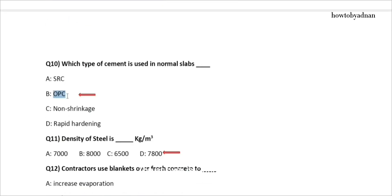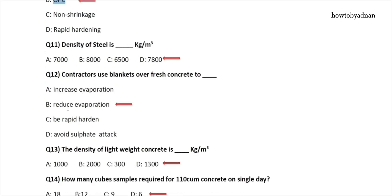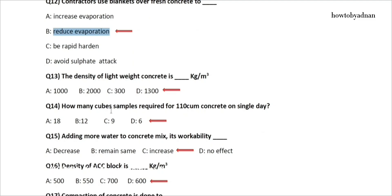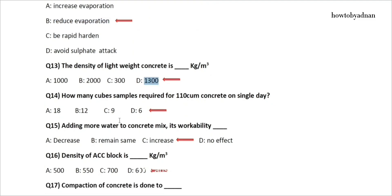Question 11: The density of steel is how many kg per cubic meter? The answer is option D: 7,800. Question 12: Contractors use blankets over fresh concrete to? The answer is option B: Reduce evaporation. Question 13: The density of lightweight concrete is how many kg per cubic meter? The answer is option D: 1,300.